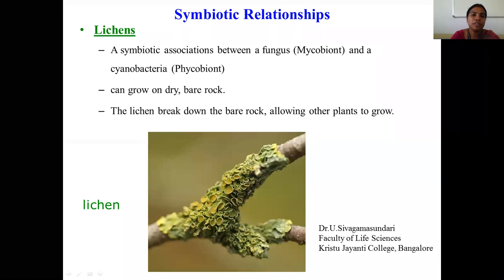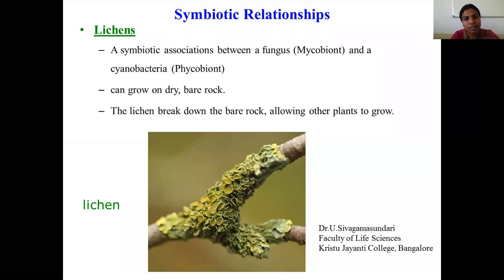Today we are going to learn about symbiotic relationships. As the first example we are going to learn about lichens. Lichens are symbiotic associations between a fungus — the fungal partner we call it as mycobion — and the algal partner, especially the cyanobacterial members, we call it as phycobion.